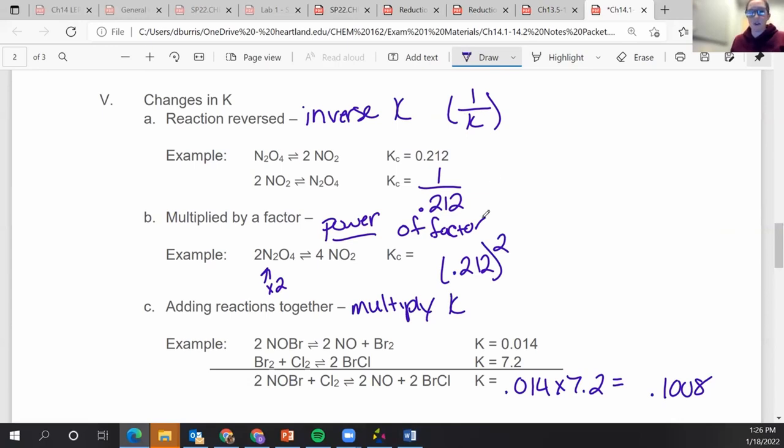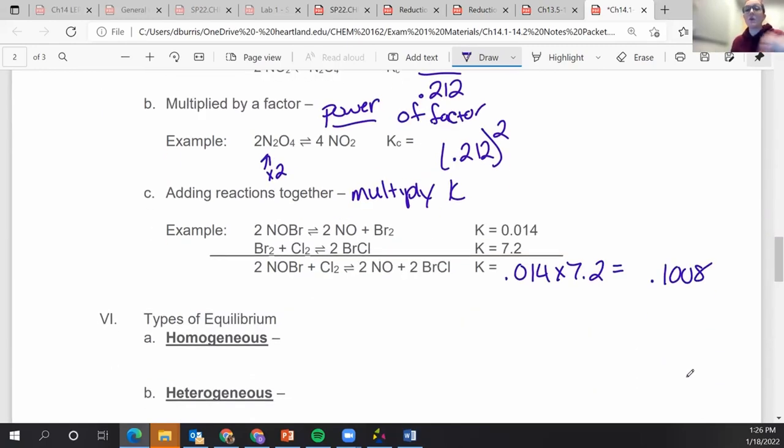So if you flip it, you do the inverse. If you multiply it, instead of multiplying it, you're going to take it to that power. And when you add them, instead of adding them, you're going to multiply them. So it's kind of like one step further.